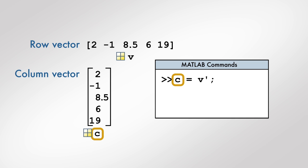Note that in this example, the original variable v is still a row vector, whereas the result c is a column vector which stores the transpose of v.